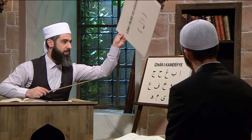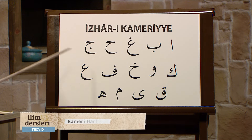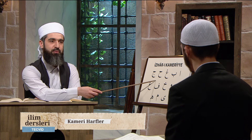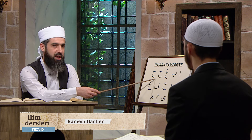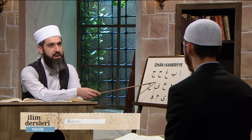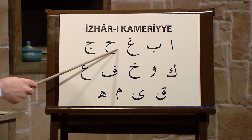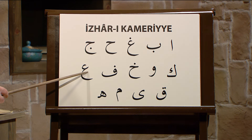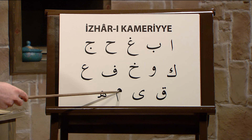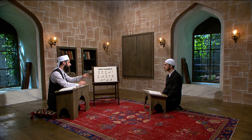14 tane Kameriyye harfimiz var. Diğer 14 yani burada olmayan diğer harfler Şemsi harflerdi. Elif-Lam takısından sonra yani Lâm-ı Tarif'ten sonra şu 14 harften biri gelirse İzhar-ı Kameriyye olur. Bu harfler şunlardır: Elif, B, Geyn, H, Cim, Kef, Veyn, H, Fe, Ayn, Kof, Ye, Mim ve H. İşte bu 14 harf Kameriyye harflerdir.